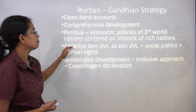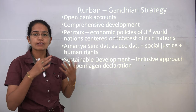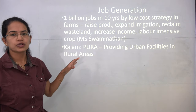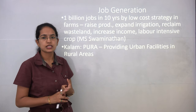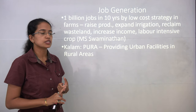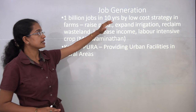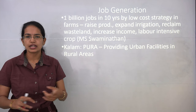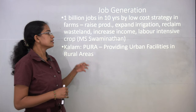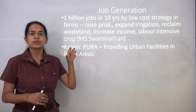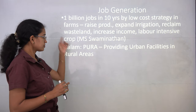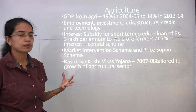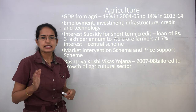Amartya Sen's view of development includes economic development, social justice, and human rights for comprehensive development leading to job generation. M.S. Swaminathan's report states that one million jobs can be created in rural areas in the next 10 years through low-cost strategies — increasing production, expanding irrigated areas, reclaiming wastelands, increasing income, and using labor-intensive techniques. PURA — Providing Urban Facilities in Rural Areas — is also being incorporated.